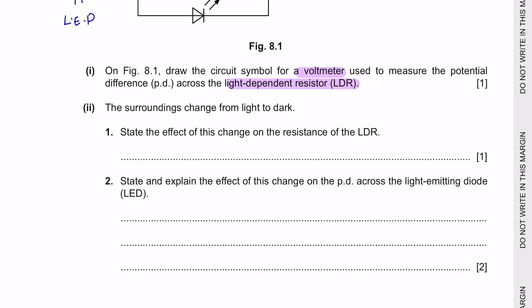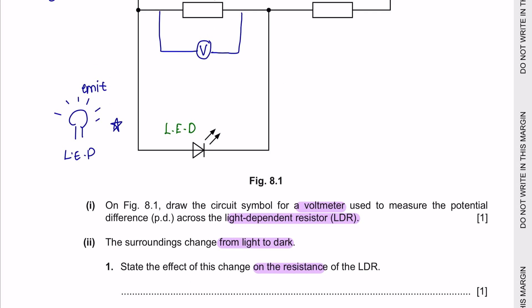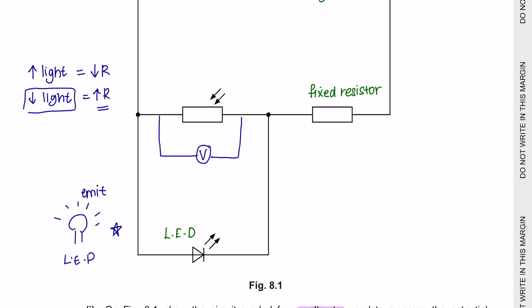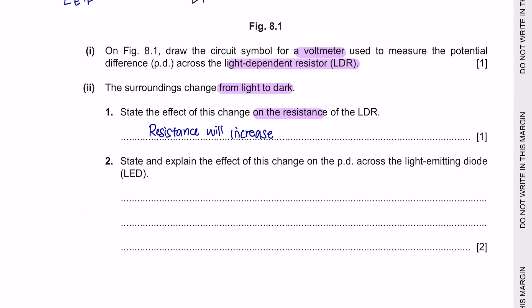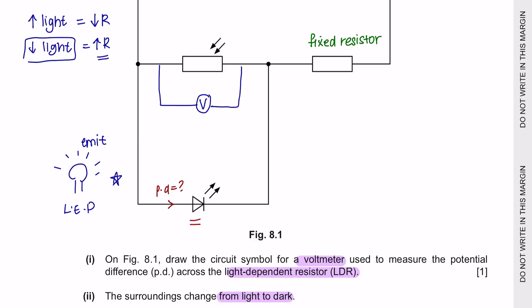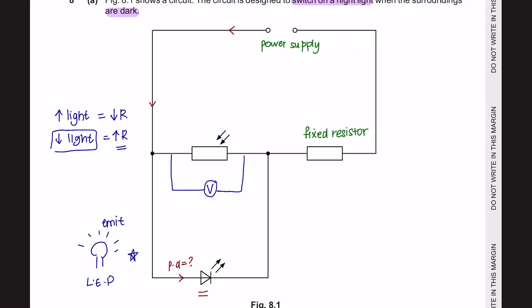Next question part 2. The surroundings changes from light to dark. State the effect of this change on the resistance of the LDR. When there is low light which is dark, the resistance increases. Next part 2. State and explain the effect of this change on the potential difference across the light emitting diode LED. We need to find out what happens to the potential difference across the diode. If the voltage travel in this direction, when it reaches this junction, the voltage will remain constant. However, when the light decreases, the resistance of this has increased. So, let's say initially it was 10 ohm, now it increases to become 20 ohm. We will notice that the overall resistance of the circuit has increased. So, if the resistance increases, the potential difference will also increase.